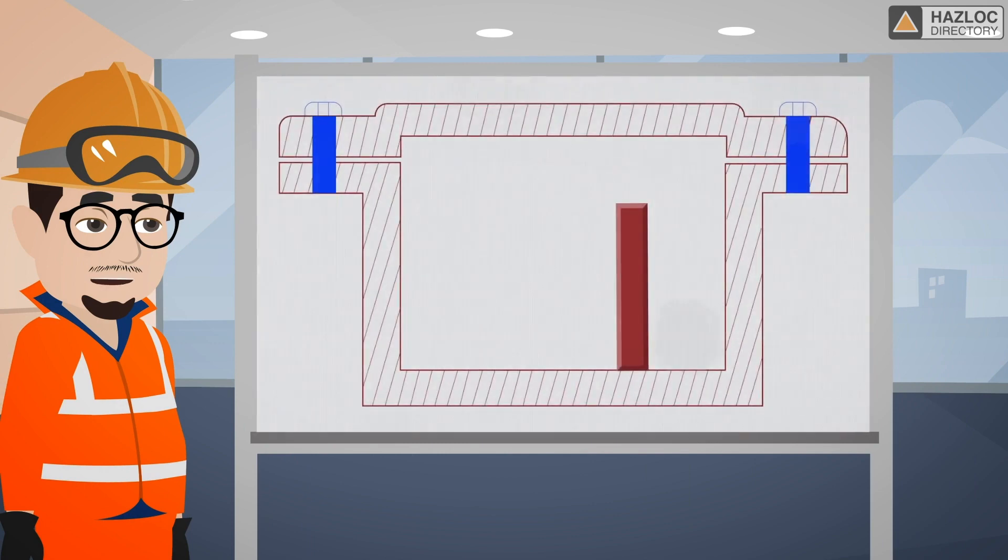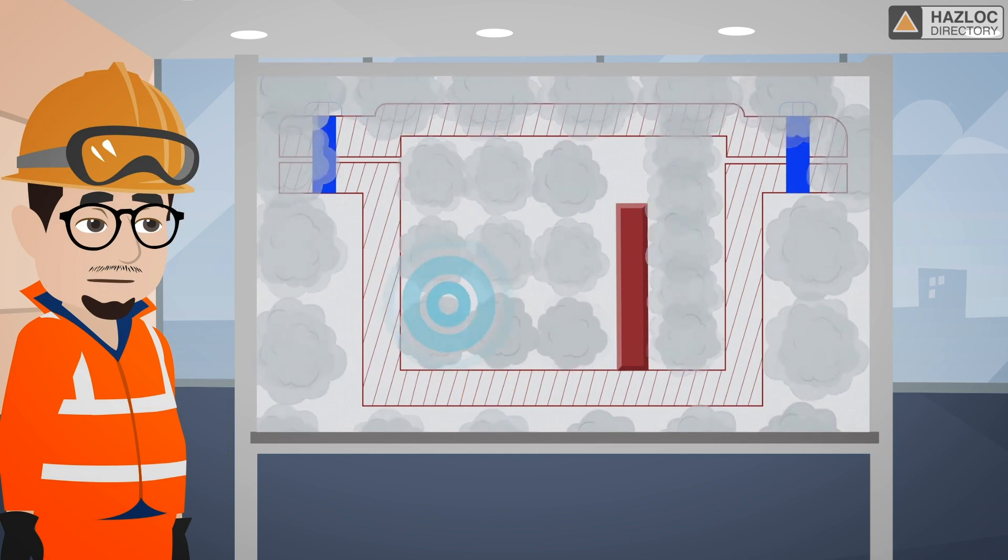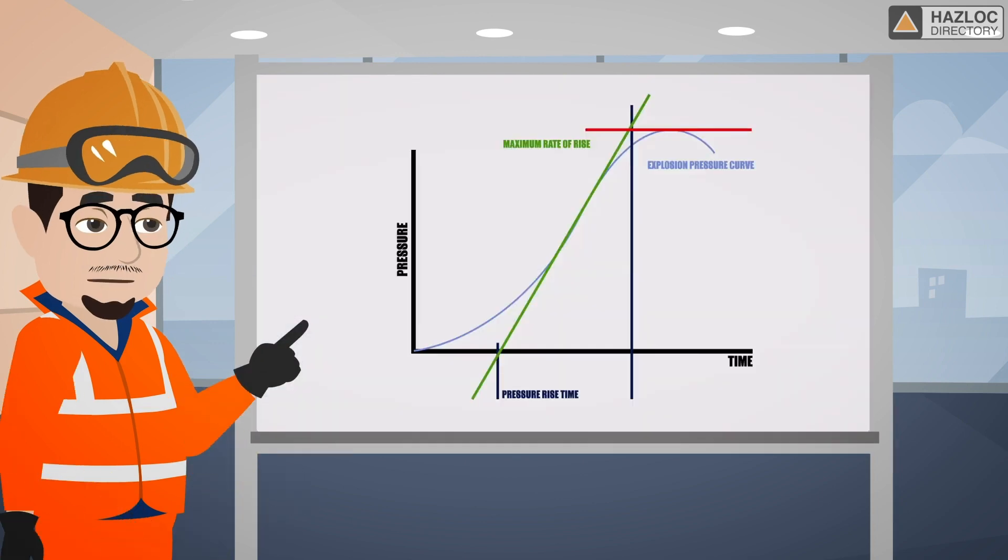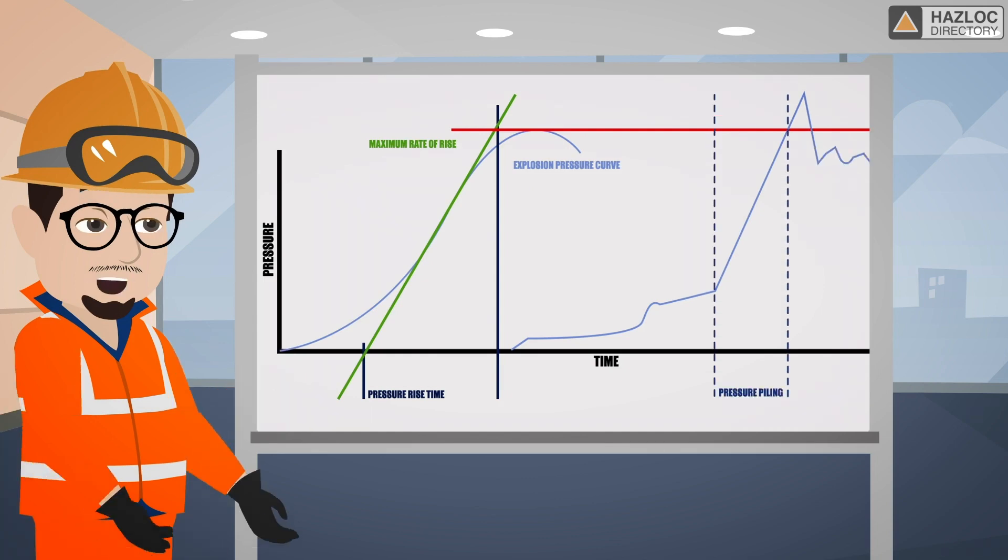In summary, we should remember that pressure piling results when gases become highly pressurized through compression and when unburned gas pushed into a cavity becomes highly pressurized before being ignited. As a result, pressure piling leads to pressure that is higher than the expected peak pressure as a result of an explosion. Given such increased pressure, enclosures and piping systems might be unable to withstand the impact of an explosion.